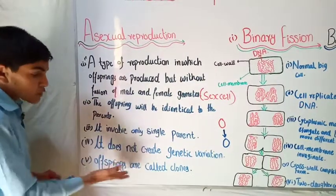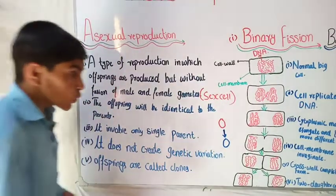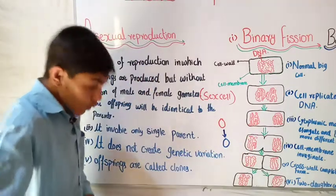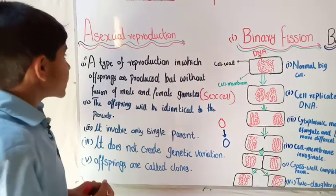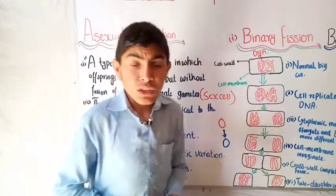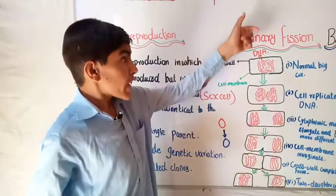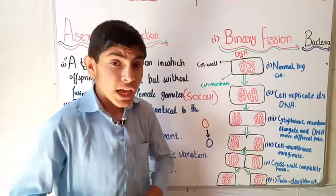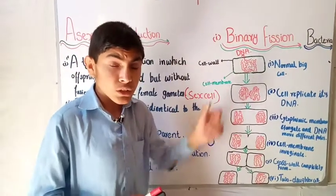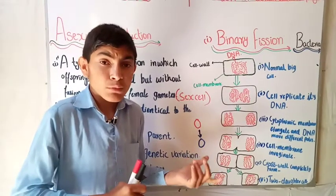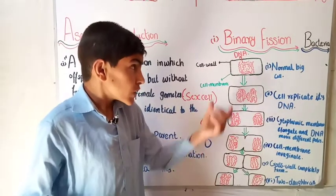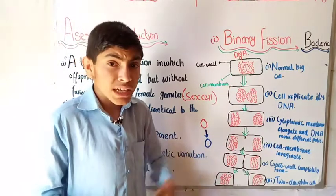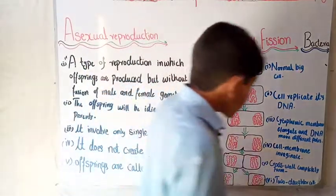Therefore the offspring will be directly identical — same characteristics as the parent. The offspring produced are called clones. Now that we know about asexual reproduction, we are going to talk about asexual reproduction in some unicellular organisms and also in Spirogyra, which is multicellular, while the unicellular organisms include bacteria and amoeba. We will talk about asexual reproduction occurring in unicellular organisms.